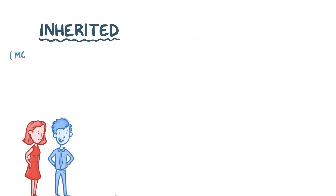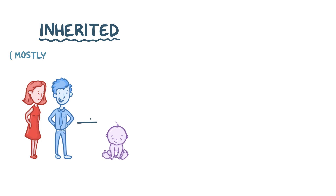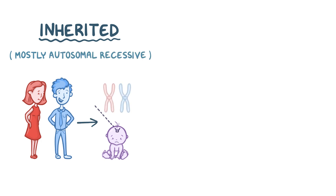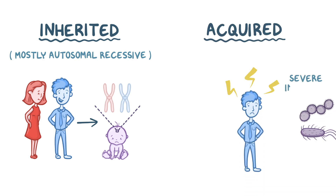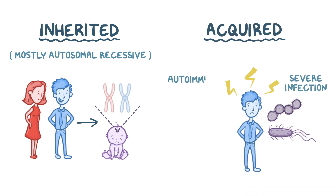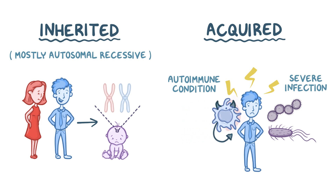Many cases of complement deficiency are inherited, and most complement deficiencies are autosomal recessive, although some have other modes of inheritance. It's also possible to acquire a complement deficiency — for example, when a severe infection or autoimmune condition causes complement proteins to get consumed or used up. In lupus, both C3 and C4 get used up, creating a deficiency of those two proteins.